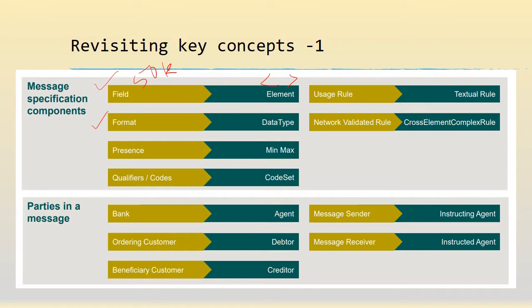Similarly, for every field we used to have a format. For example, we used to have an address field for field 50 or 52, where it used to have a BIC and then the next four lines for address. However, in the realm of XML, we are going to have a data type to suggest whether it's numeric, alpha, or a character. Thirdly, we used to categorize fields as either mandatory or optional — M or O — and we now know that in XML these are established by the XSDs which define minimum occurrence and maximum occurrence.